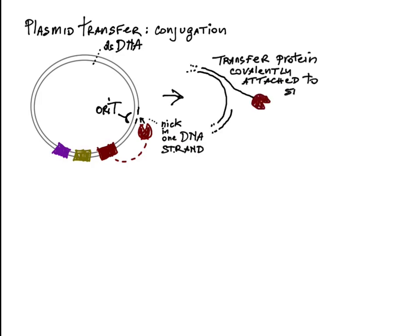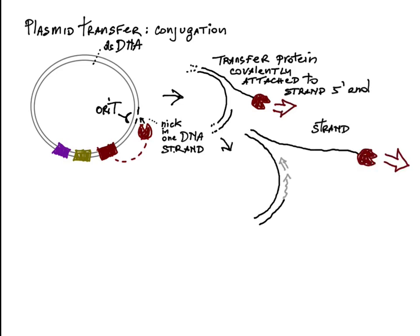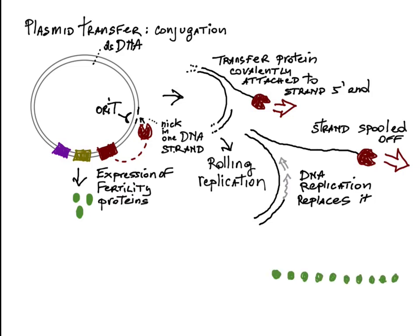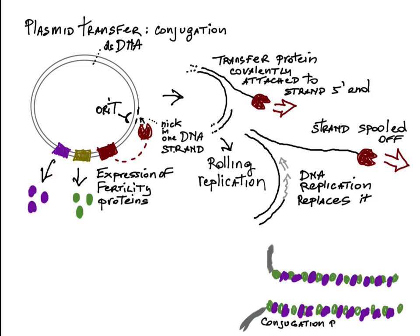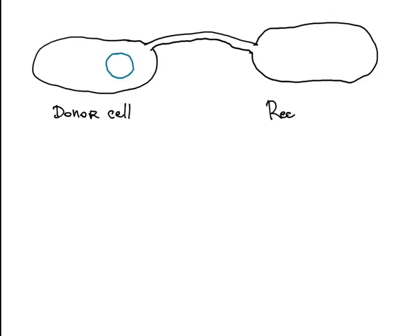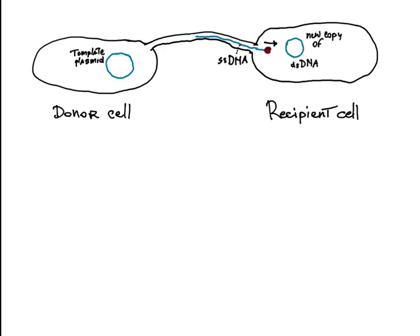It initiates rolling replication, a process in which the strand of DNA is spooled off the plasmid concurrent with replication that replaces it. The expression of the plasmid fertility genes results in proteins that form the conjugation pilus. The single strand of DNA is channeled through the conjugation pilus.